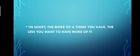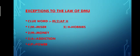In short, the more of a thing you have, the less you want to have more of it. Now let's learn the exceptions to the law of diminishing marginal utility. To remember the exceptions, I'll give you a clue word.